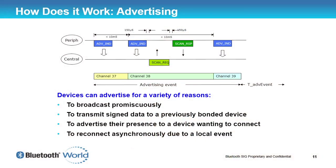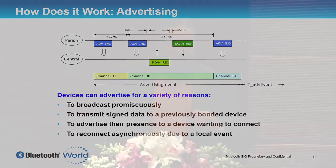We also have very fast connections. For advertising, we advertise on all three advertising channels in sequence very quickly. If you're advertising once a second, you advertise on the first, second, then third advertising channel, then go to sleep. You wake back up and repeat: first channel, second channel, third channel, sleep — and so on. As you can see in the diagram, these advertising channel packets go out in sequence.